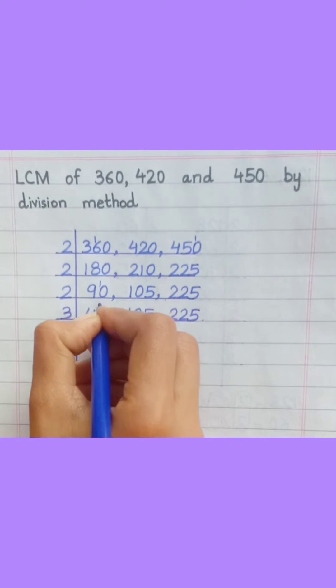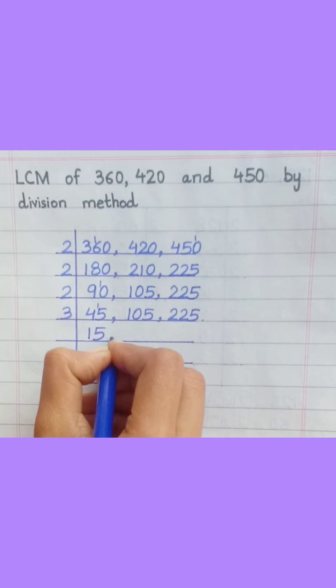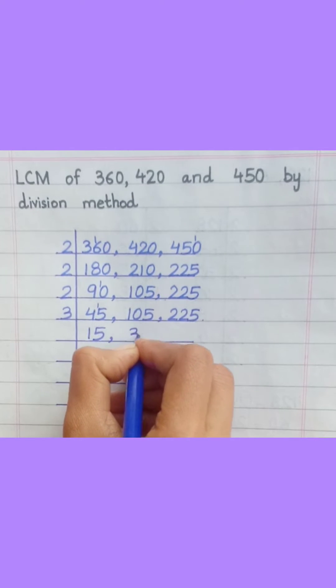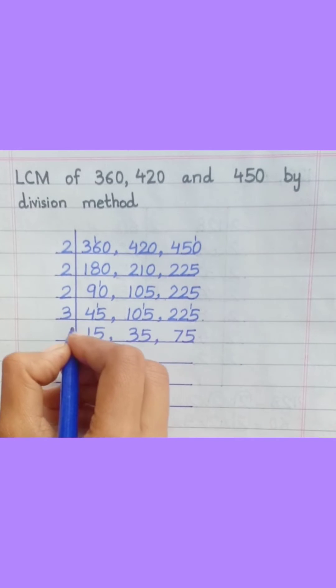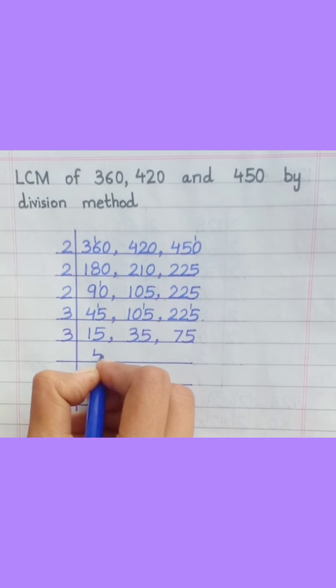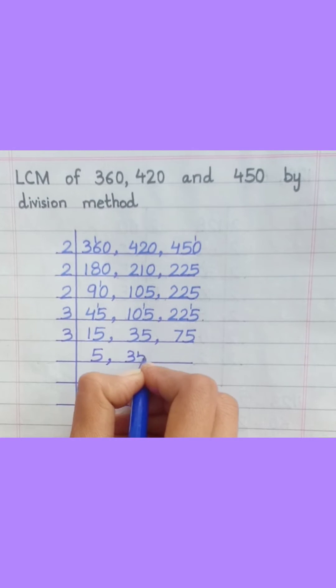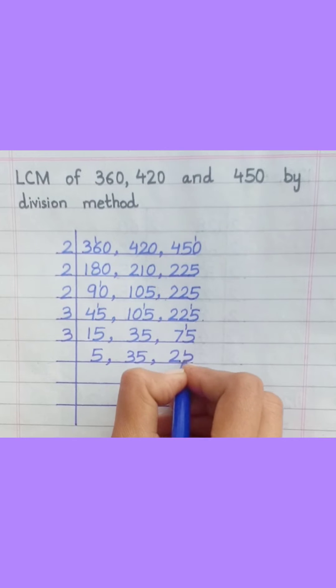3 ones are 3, 3 fives are 15. 3 threes are 9, 3 fives are 15. 3 sevens are 21, 3 fives are 15. 3 fives are 15. 3 twos are 6, 3 fives are 15.